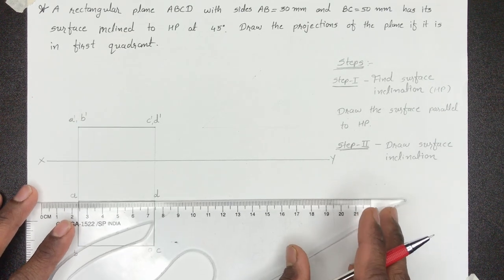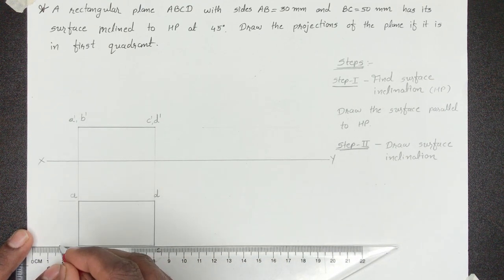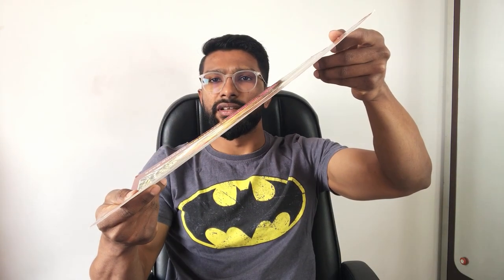Step 1 में आपको rectangle के dimensions show करने होंगे. Step 2 में हमें surface inclination draw करनी है. Rectangle को HP के साथ incline करने के लिए 2 possibilities हैं. First possibility में आप rectangle को ऐसे incline कर सकते हो जहाँ HP के साथ angle आगे है. Second possibility है आप plane को ऐसे incline कर सकते हो जहाँ horizontal plane के साथ angle आपको यहाँ पे मिलेगा.